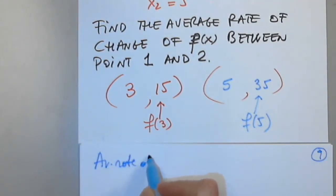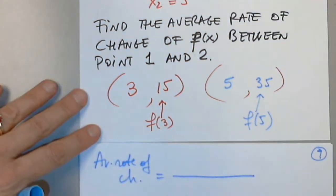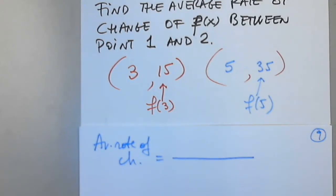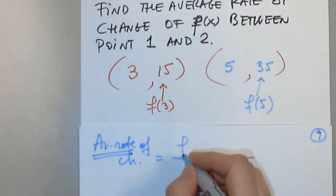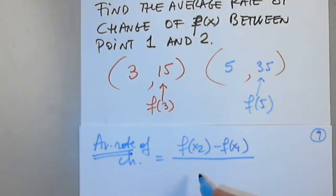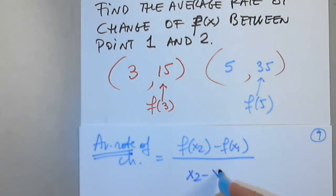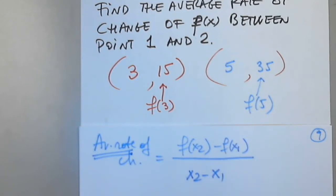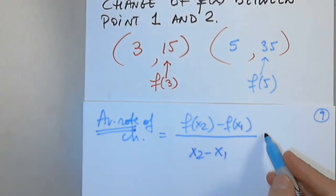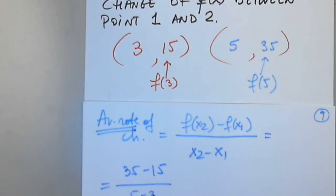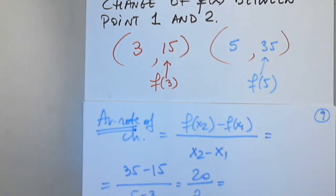Now I want the average rate of change. It's the slope of the line passing through the points, but we write it as f of x2 minus f of x1 over x2 minus x1 — the rise over run. Instead of writing y2, we write f of x2, which is y2. Plugging in: 35 minus 15 over 5 minus 3 equals 20 over 2 equals 10. The rate of change of this function between the given points is 10.